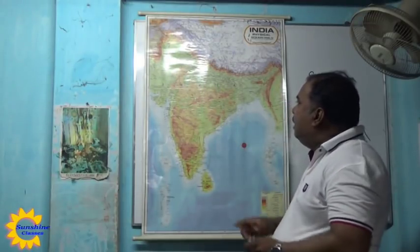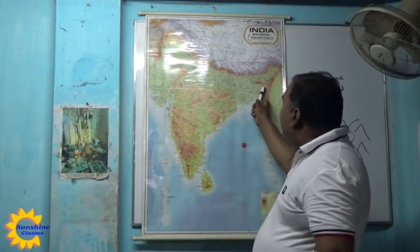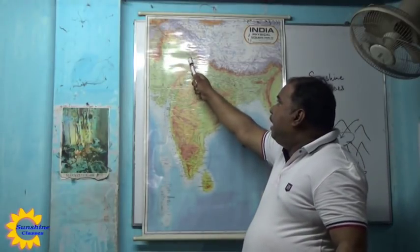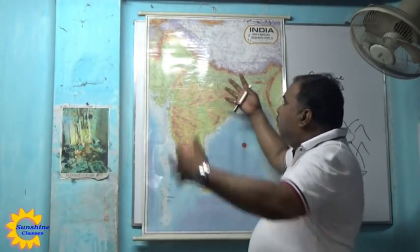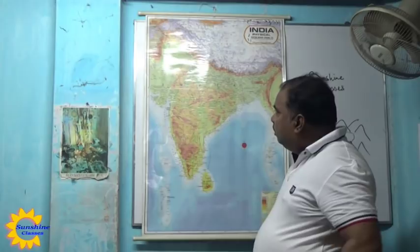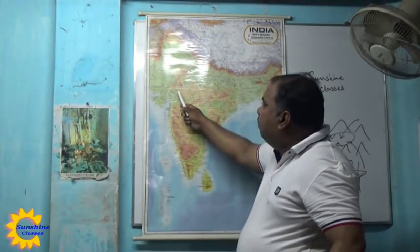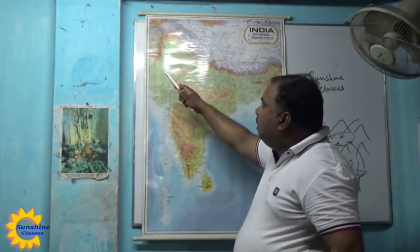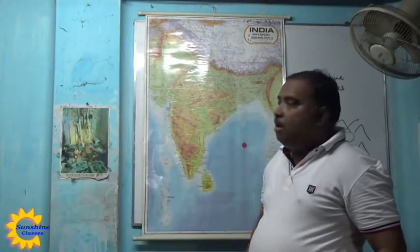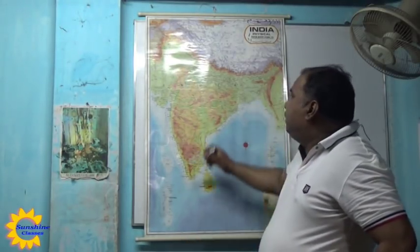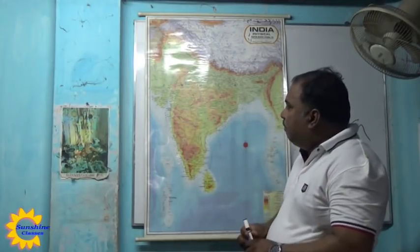Kerala starts experiencing rainfall from 1st June, Goa by 5th June, and the monsoon enters Mumbai by 10th June. By 15th June the entire northern India experiences rain, as the Arabian Sea branch and the Bay of Bengal branch meet in the northern part and cause heavy rainfall in Delhi, Punjab, and Uttarakhand. This sometimes leads to heavy floods in Uttar Pradesh, Bihar, and Uttarakhand. By 15th July, this southwest monsoon reaches Pakistan.